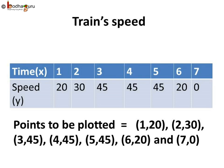Lastly, at the 7th minute, it came to a stop again. This is the last point to be plotted which is (7,0). Meaning, x coordinate of this point is 7 and y coordinate is 0.